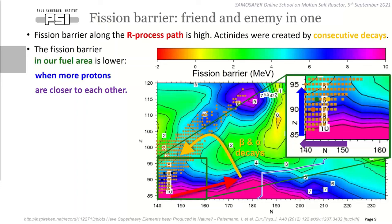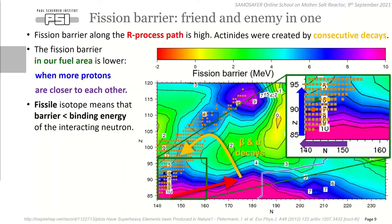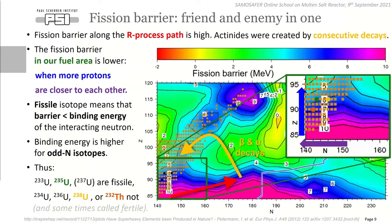How can uranium-235 be originated by neutron capture? The answer is the fission barrier. Along the r-process (rapid neutron capture process), you have neutron-rich nuclides where the fission barrier is very high, so they don't fission during the supernova process. Later they decay to the actinide area we know. Fissile means the fission barrier is smaller than the binding energy of the interacting neutron. The neutron likes to be in pairs, so binding energy is higher for odd-neutron-number isotopes — therefore uranium-233, 235, 237 are fissile, while uranium-234, 236, 238 and thorium-232 are not fissile, they are called fertile.